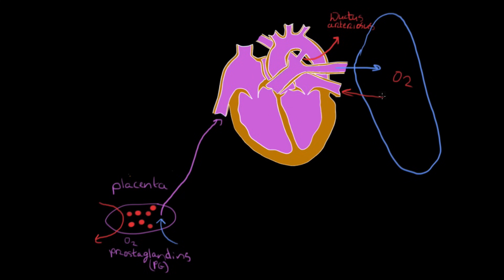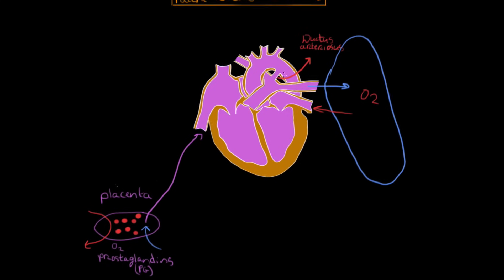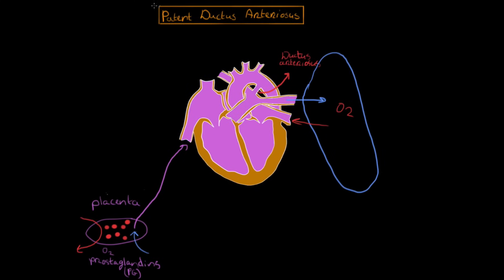Now, once all of these things are happening, what happens is this ductus arteriosus, we don't need it anymore so it can close. But in some individuals, that doesn't close. And that's what we call patent ductus arteriosus. The word patent means open. So the ductus arteriosus remains open. Now, why would that happen? Well, let's talk about closure. Why does it close?